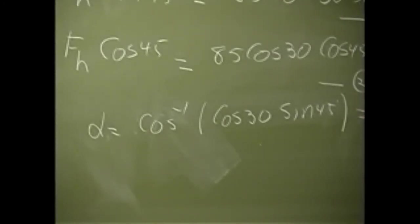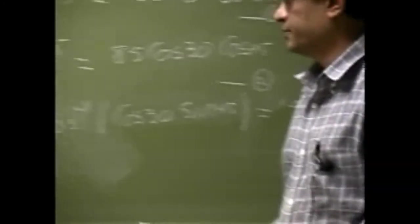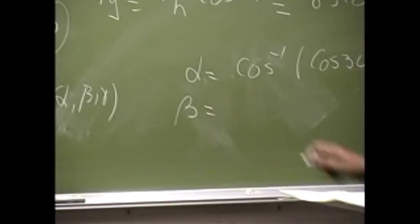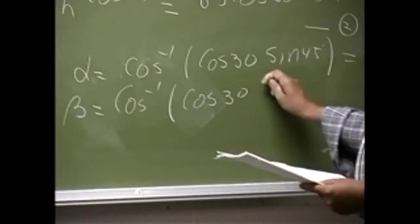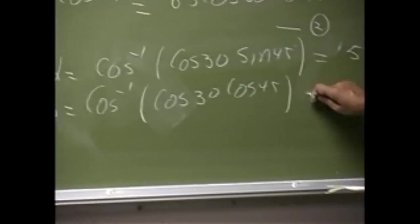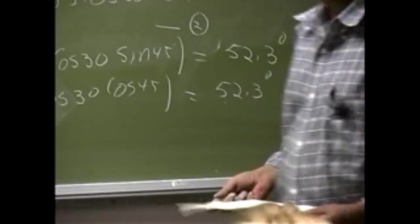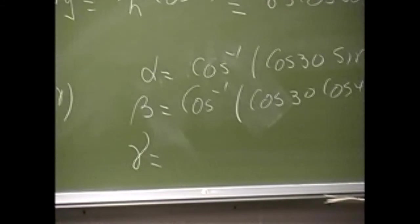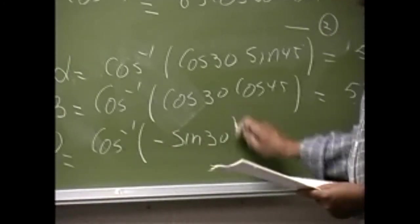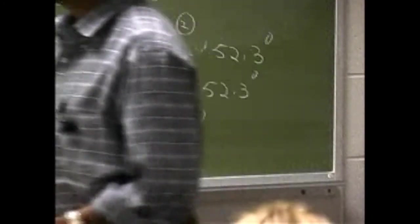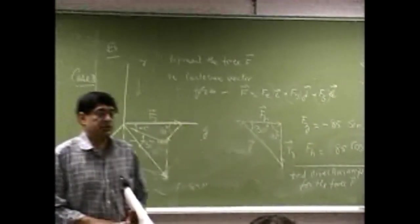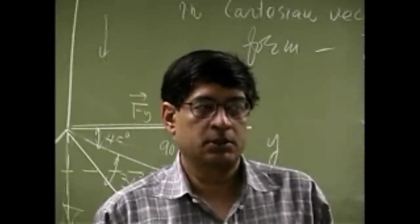From the first equation I can say that alpha equals cosine inverse of cosine 30 times sine 45, and that's going to be 52.3 degrees. Then beta equals another cosine inverse of cosine 30 times cosine 45, and this should be the same number: 52.3 degrees. In the last one, gamma equals cosine inverse of negative sine 30, and if you do the actual calculation that will come out to be 120 degrees. So that's an additional step where you can find the actual angles the force makes with the x, y, and z axes.